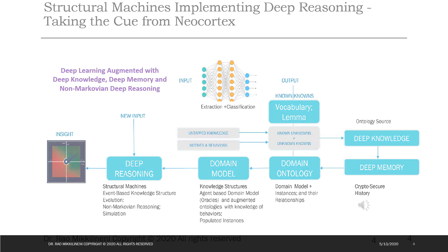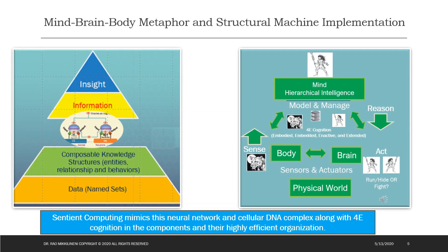Digital DNA encodes the processes that specify how to construct distributed computing structures — executing a set of functional requirements and control processes that build them, monitor them, and manage their evolution without disruption, even in the face of rapid fluctuations in the demand or availability of computing resources. Just as in living organisms, we use embedded, enacted, embodied, and extended computing processes to execute sentient computing structures.